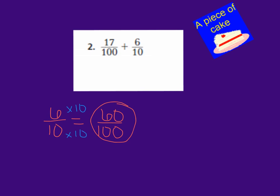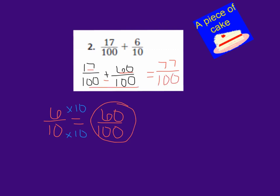So the equivalent fraction for 6 tenths out of hundredths is 60 hundredths. Now I'm able to add. I can say 17 hundredths plus 60 hundredths. If I just add my numerators, 17 plus 60, that gives me 77, and my denominator stays 100. So our answer is 77 hundredths.